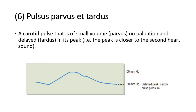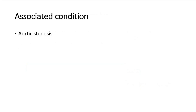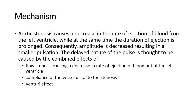The sixth type is pulsus parvus et tardus. This is a carotid pulse that is of small volume on palpation and delayed in its peak, where the peak is closer to the second heart sound. This is associated with aortic stenosis. For its mechanism, aortic stenosis causes a decrease in the rate of ejection of blood from the left ventricle, while at the same time the duration of ejection is prolonged. Consequently, amplitude is decreased, resulting in a smaller pulsation. The delayed nature of the pulse is thought to be caused by the combined effects of flow stenosis causing a decrease in rate of ejection of blood out of the left ventricle.